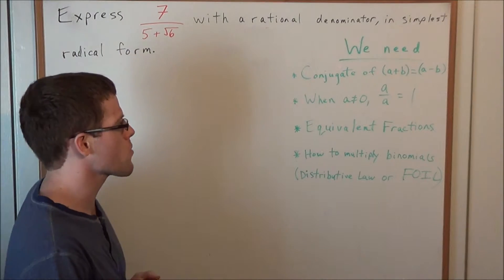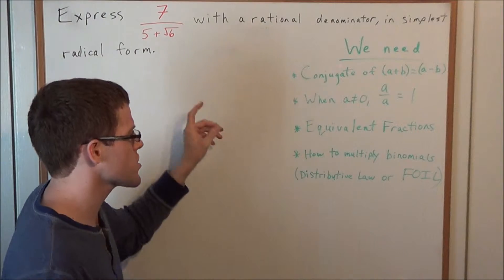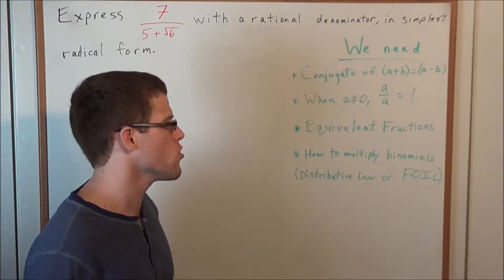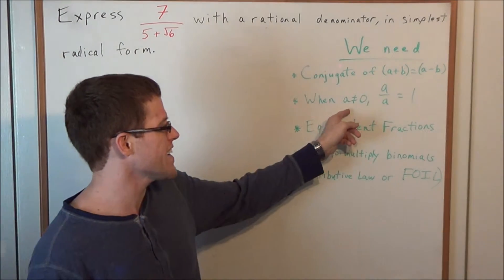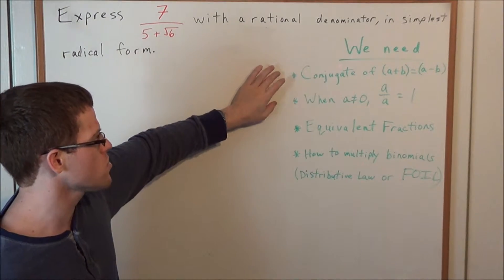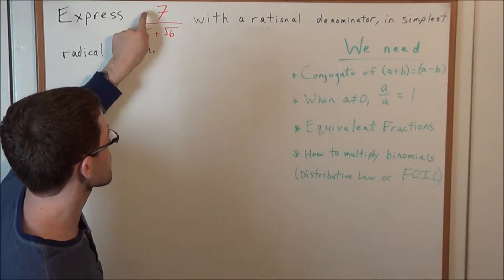Now before we get started, let's take a look at what we're going to need to solve this problem. We need to know what a conjugate is, and the conjugate of this binomial a plus b is equal to a minus b. So all we do is negate the second term. Now we also have that when a is not equal to 0, we have a divided by a equals 1. We're going to couple these two ideas to generate an equivalent fraction of this particular fraction.